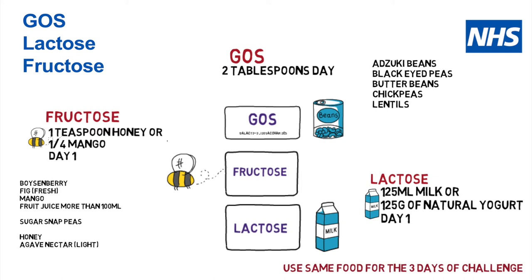With these three food groups — fructose, galacto-oligosaccharides, and lactose — if you tolerate one food in each group, the chances are you'll tolerate the other foods that fall specifically into that group. Use the same food for each of the three-day challenges. For instance, if you decide to use honey, use honey for all three days — don't mix and match different fructose foods. The same applies for galacto-oligosaccharides: if you decide to use chickpeas as your tester, stick with chickpeas for the three days.